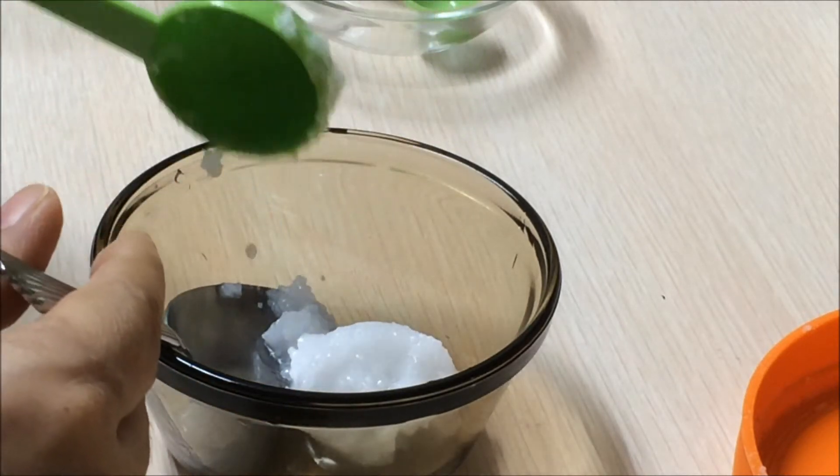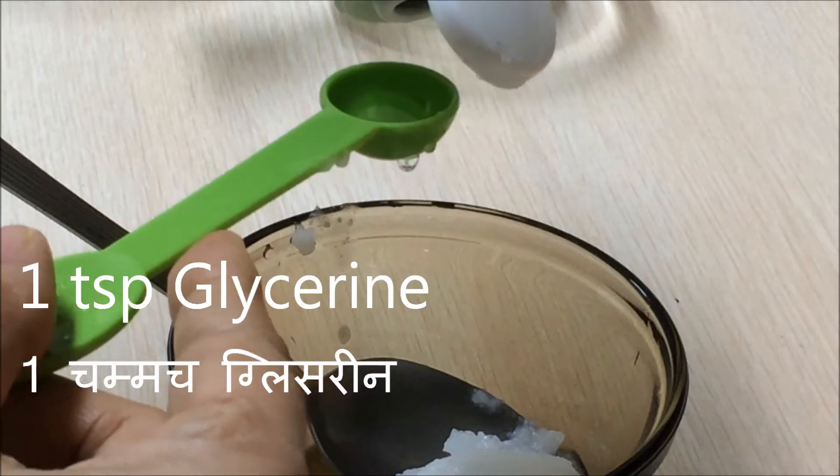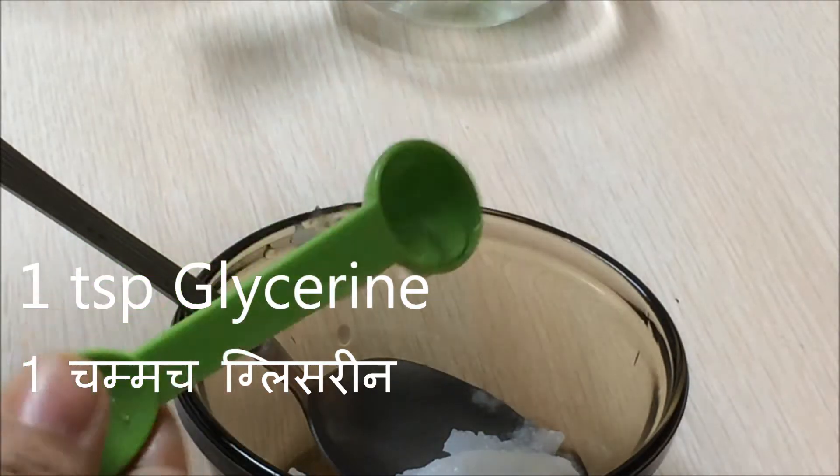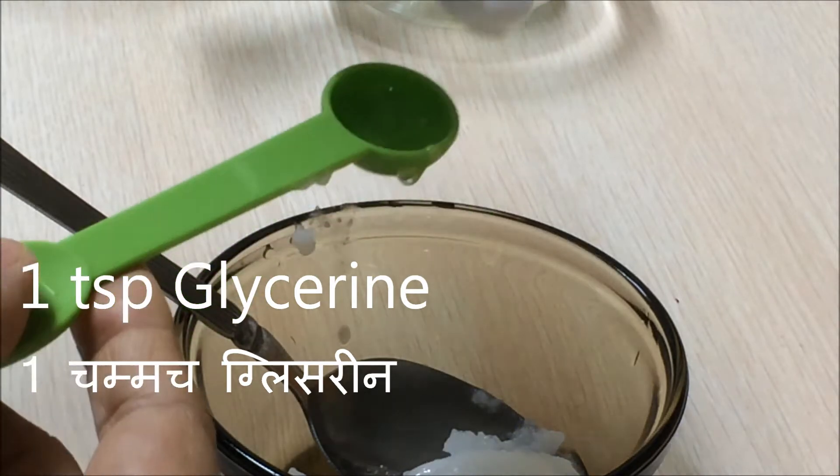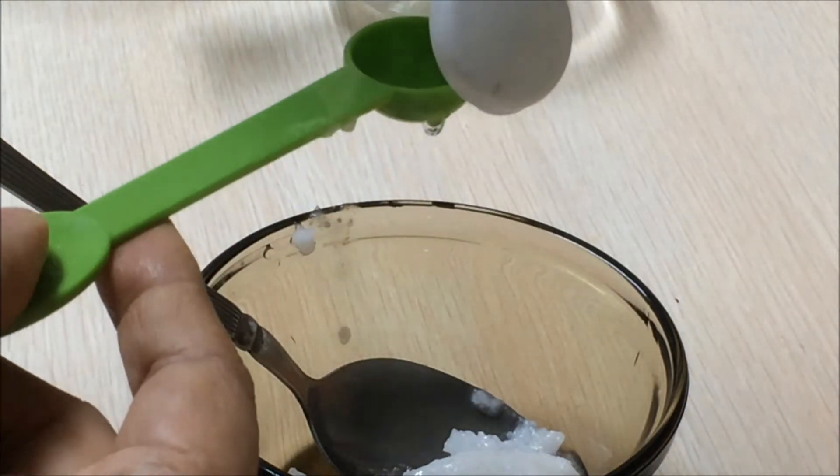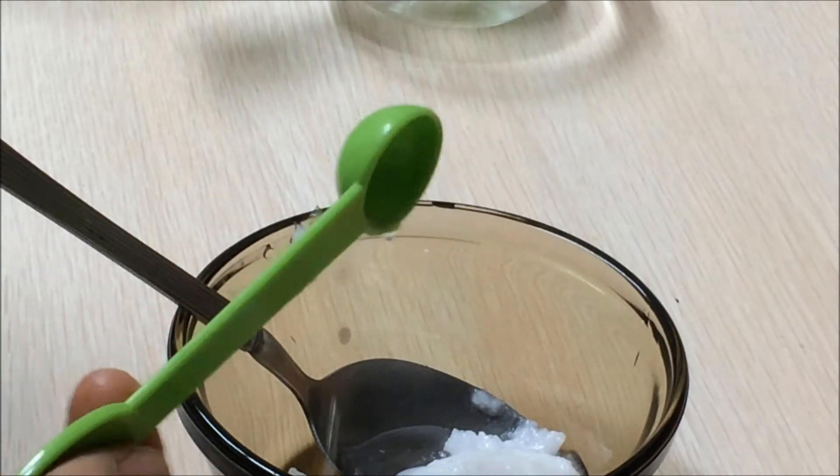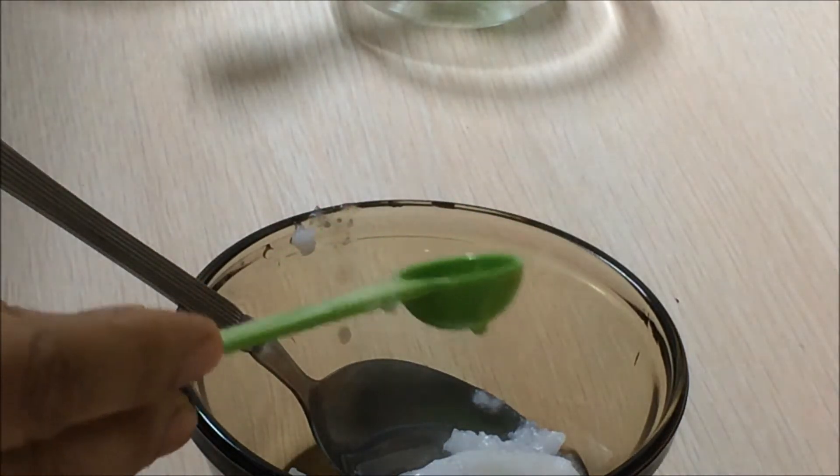To this we are going to add one teaspoon of glycerin. A good thing about glycerin is it helps to remove all the impurities on your skin. It will help to remove the makeup. At the same time it will not take out any water. It will retain the water in the skin so your skin won't feel any dryness.